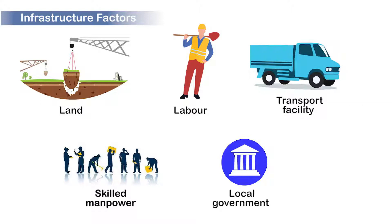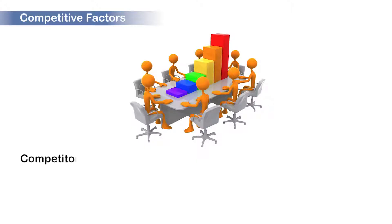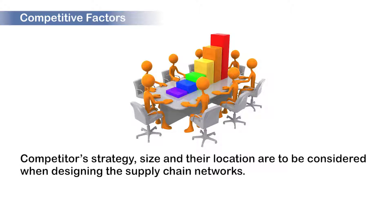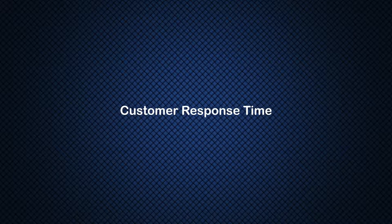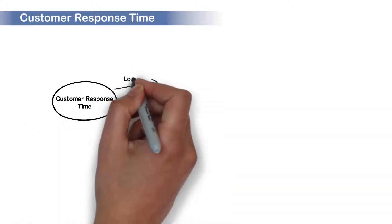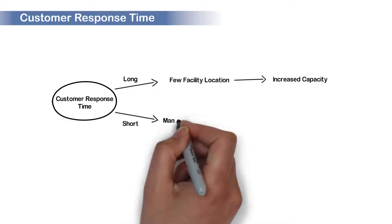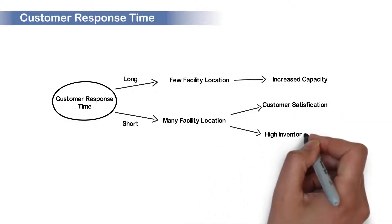One has to consider these factors and decide on locating the facility in that place. Competitive factors play an important role in identifying the best possible location. Competitive strategy, their size and location are to be considered when designing the supply chain networks. When co-location of the facility with the competitor benefits the company, they locate themselves closer and get the benefit. The next factor is the customer response time. When customers can wait for a longer response time, the company can plan to have a few facility locations and can increase the capacity of the location. Whereas, when a customer wants a faster response time, the companies have to increase the required number of facilities in the network so it satisfies the customer requirement. This results in an increase in inventory cost.